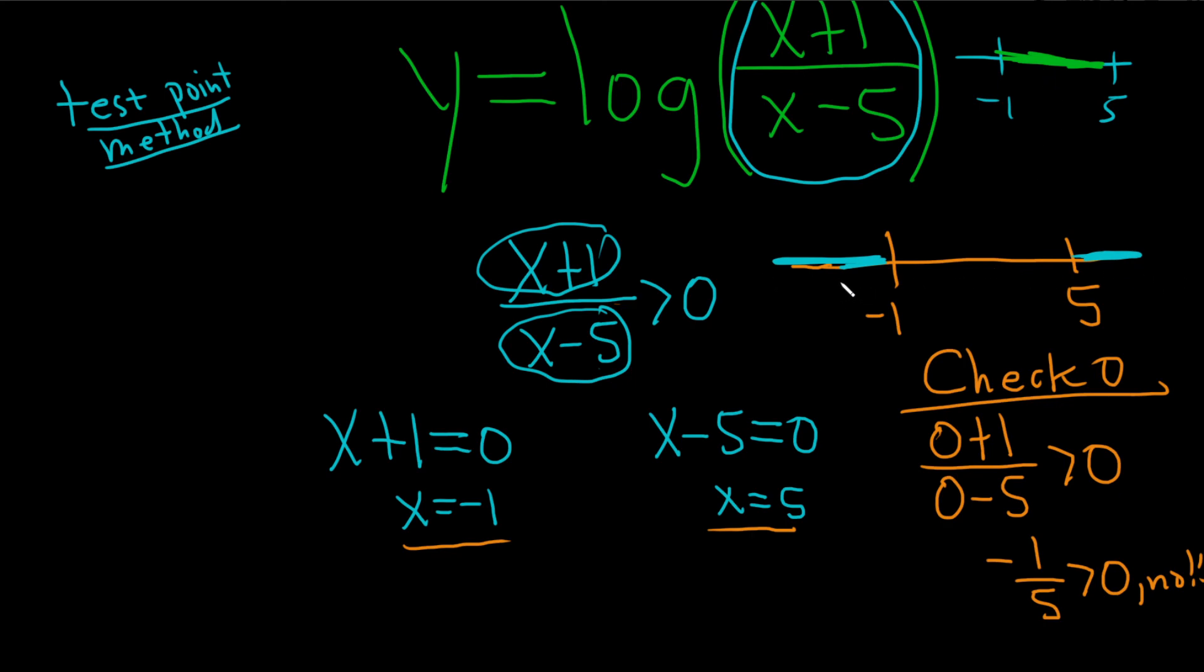Let's write the answer down now. We use parentheses because we have a strict inequality. You'll find that always happens in these problems with logs and domain. The final answer is negative infinity to negative 1, union 5 to infinity. That will be the domain of this logarithmic function.